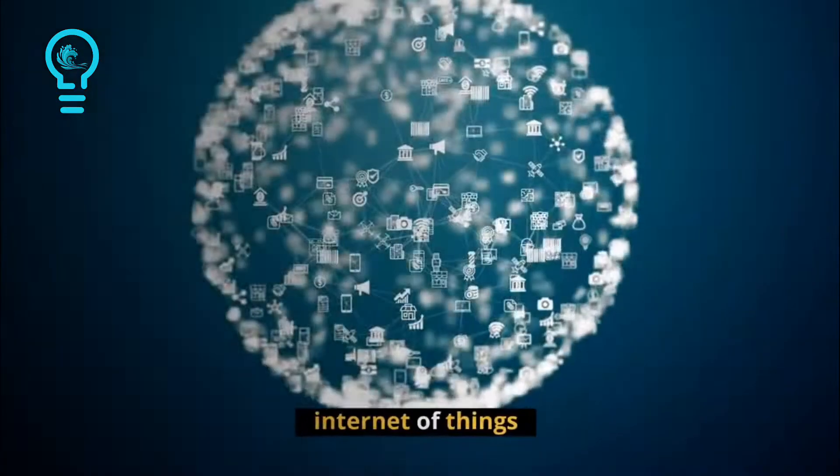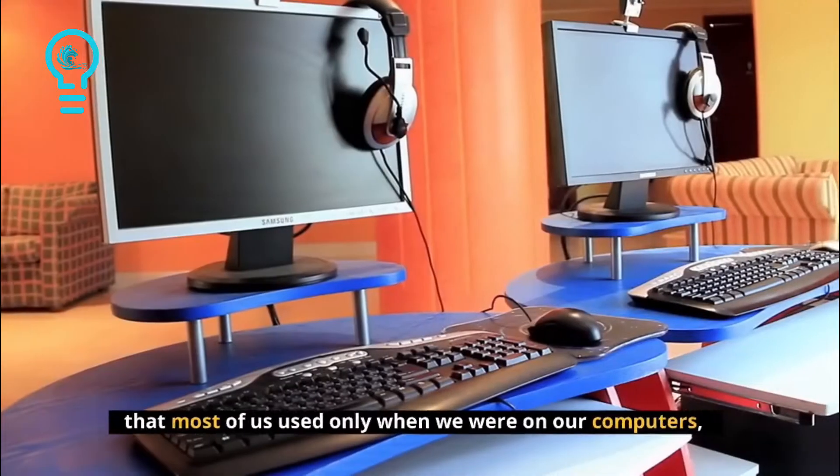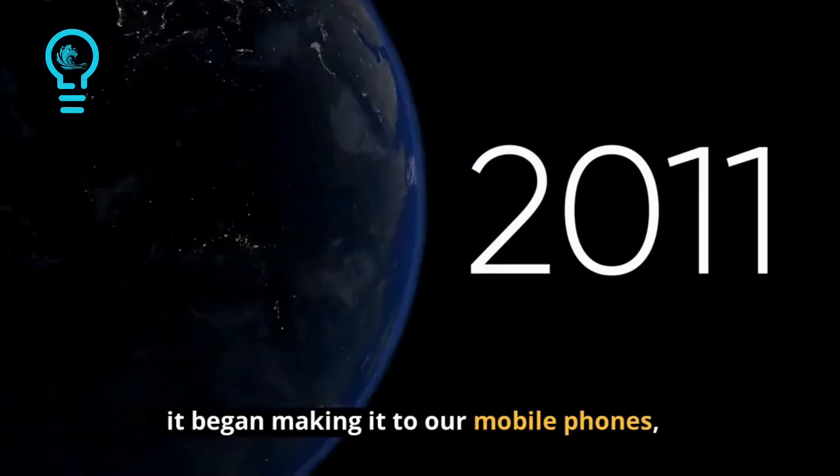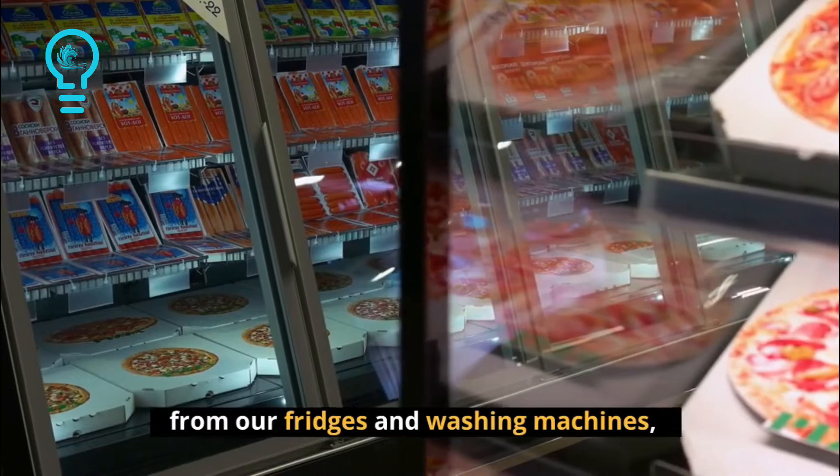Number 1, Internet of Things. In the past, the internet was the thing that most of us used only when we were on our computers. Then some years ago, it began making it to our mobile phones, then our video game consoles. Everything we use, both indoors and outdoors will be on the internet, from our fridges and washing machines, to our power supply and home security systems.